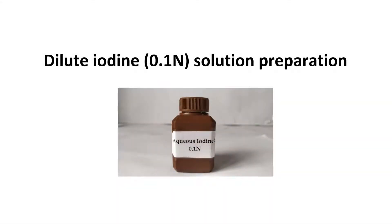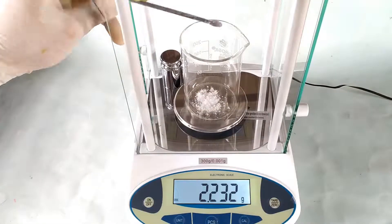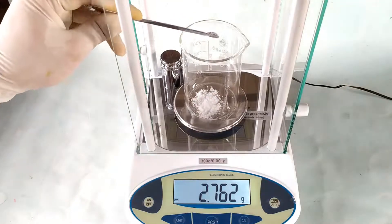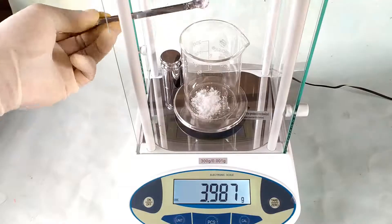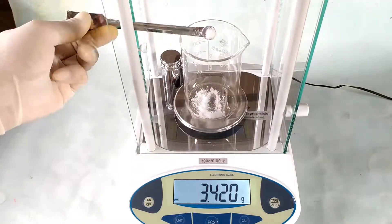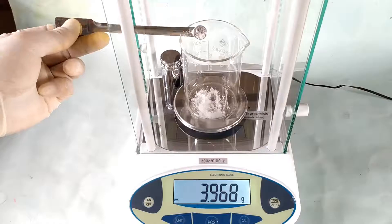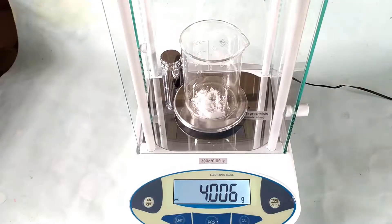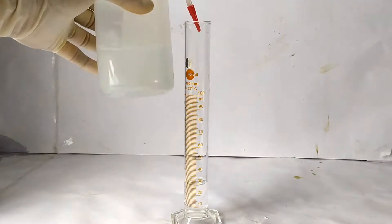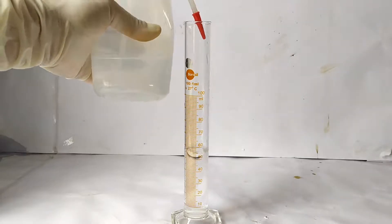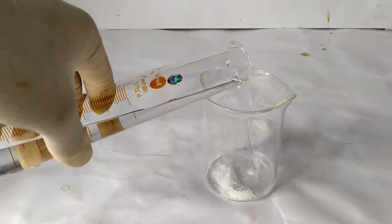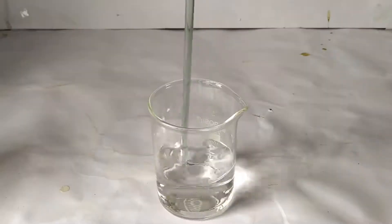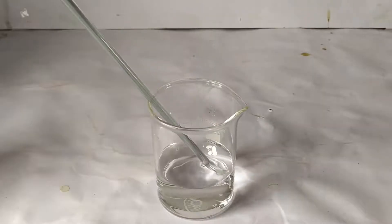To prepare 100 ml of dilute approximately 0.1 normal aqueous iodine solution for use in starch detection experiments, first weigh 4 grams of potassium iodide in a tared beaker. Then measure 100 ml of distilled water in a graduated cylinder, pour it carefully and completely into the beaker, and gently stir to completely dissolve the iodide salt.